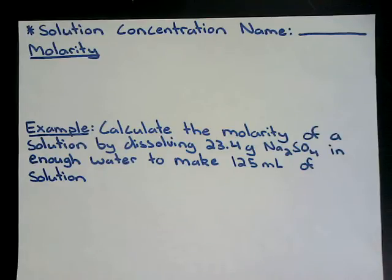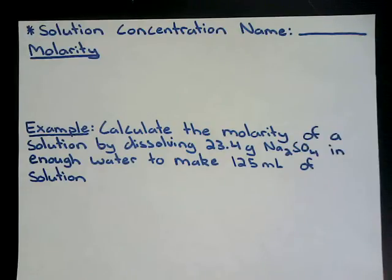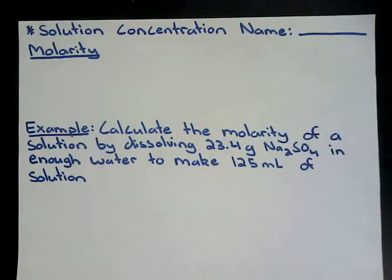There are quite a few objectives and calculations that go along with this particular section. The first objective is to calculate the molarity, solution volume, or number of moles of solute given any two of these quantities. Objective number two: calculate the volume of a more concentrated solution that must be diluted to obtain a given quantity of a more dilute solution.